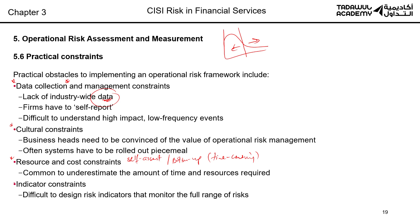And finally, indicator constraints. We've looked at the KRIs — they can be process KRIs and non-process KRIs which are related to staff. We only know a few of these indicators; we don't have much information about them. They are difficult to design and to monitor.